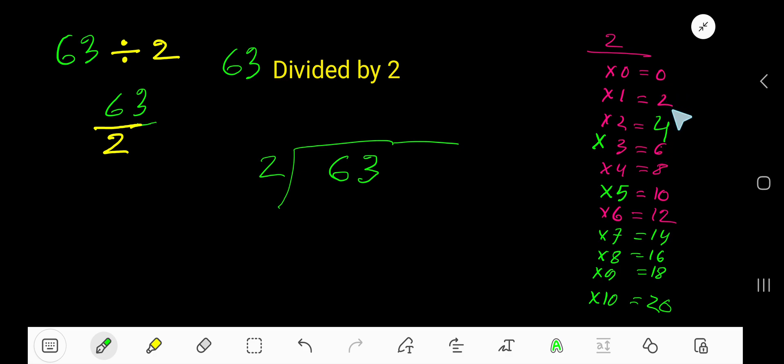0 plus 2 equals 2, 2 plus 2 equals 4, 4 plus 2 equals 6, 6 plus 2 equals 8. This will continue.